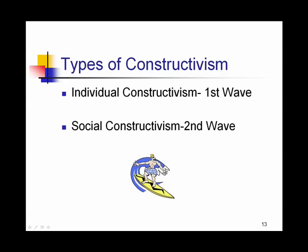There are two types of constructivism. Individual constructivism was considered the first wave, tied to Piaget's theory, with a focus on the individual construction of knowledge and a person's belief about their identity. Social constructivism was the second wave, tied to Vygotsky and Bandura's theories, where the interest was more in how learning is constructed in a social context.